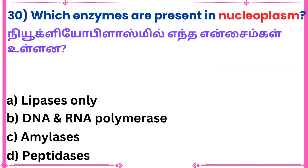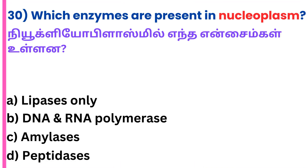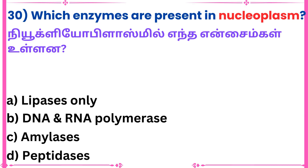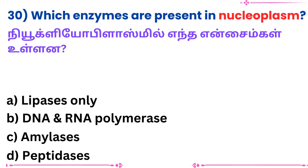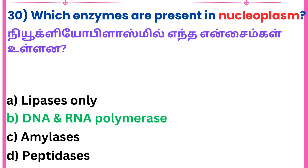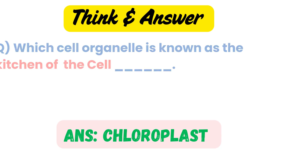Thirtieth question: Which enzymes are present in nucleoplasm? Answer: DNA and RNA polymerase.